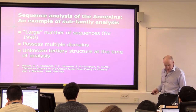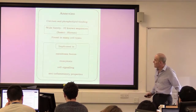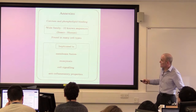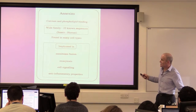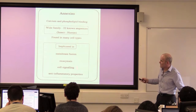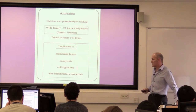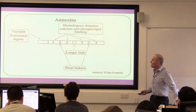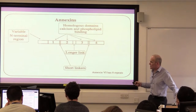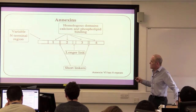It took a while to get it published, but it was published in 1991. About the annexins: we knew there were calcium and phospholipid binding, there were 22 known sequences, they ranged from insects to human, they were found in many cell types and implicated in all these different processes. And when you looked at a single annexin sequence, they had this kind of basic structure - a variable N-terminal domain and then four repeats.